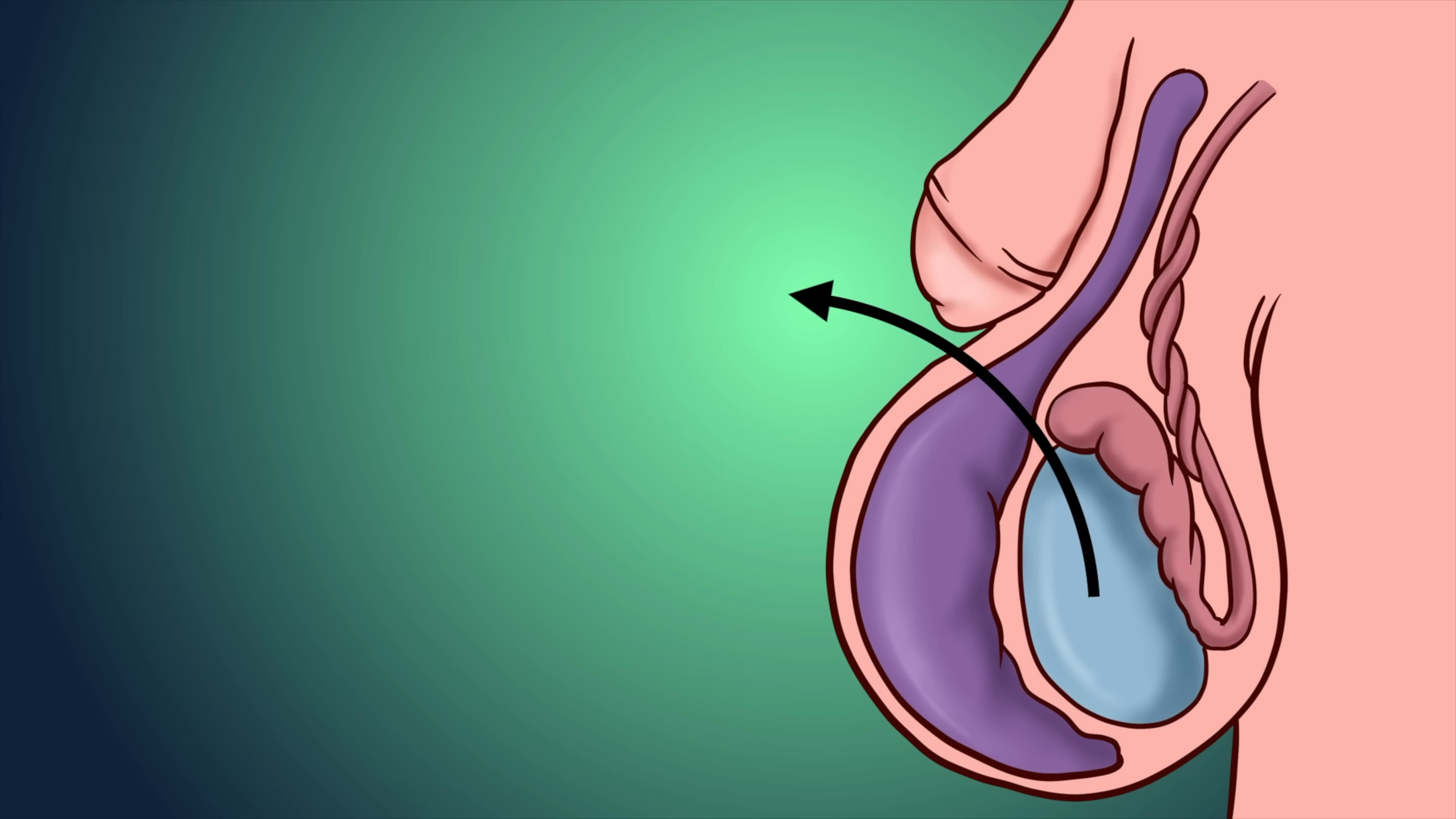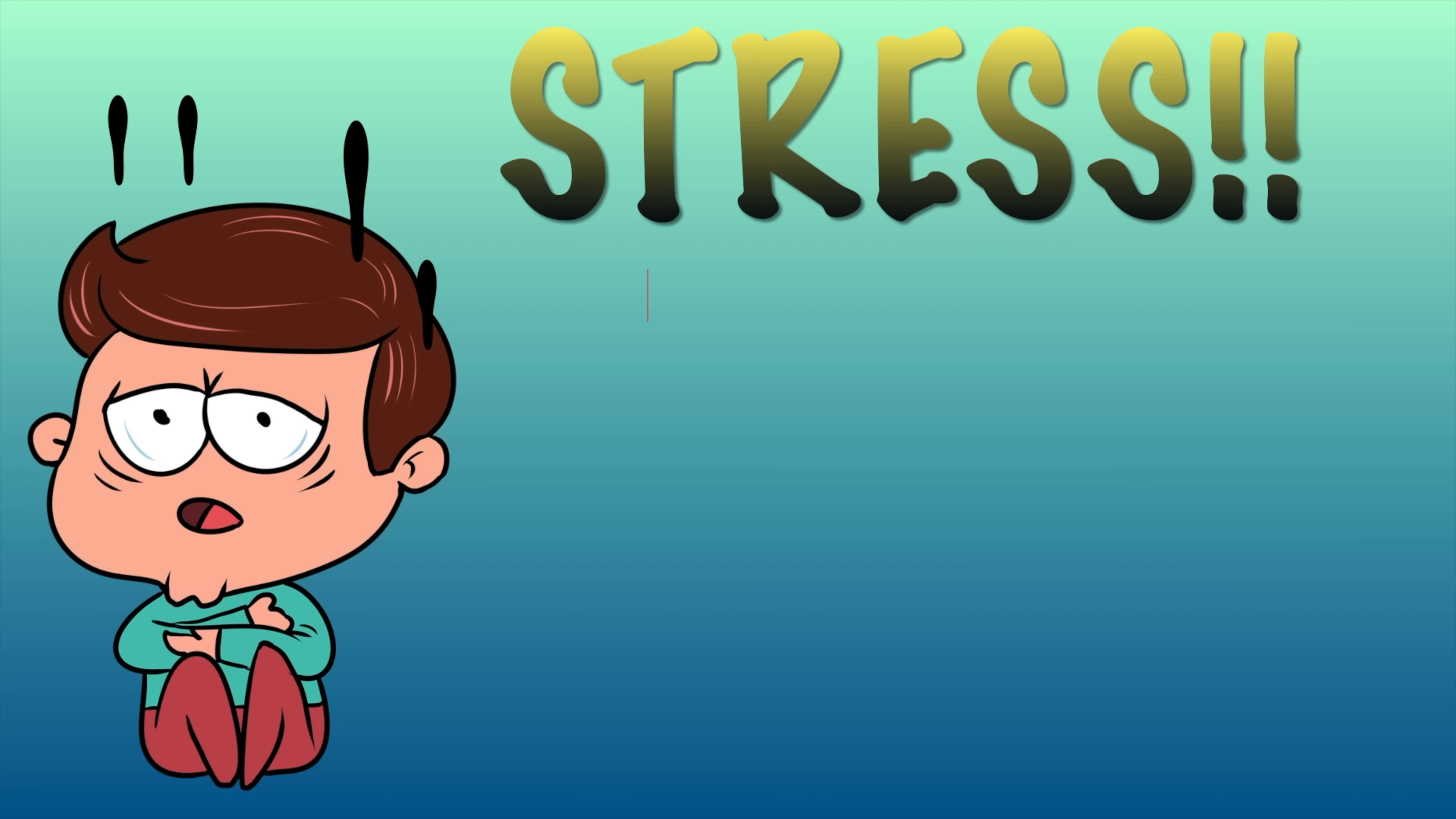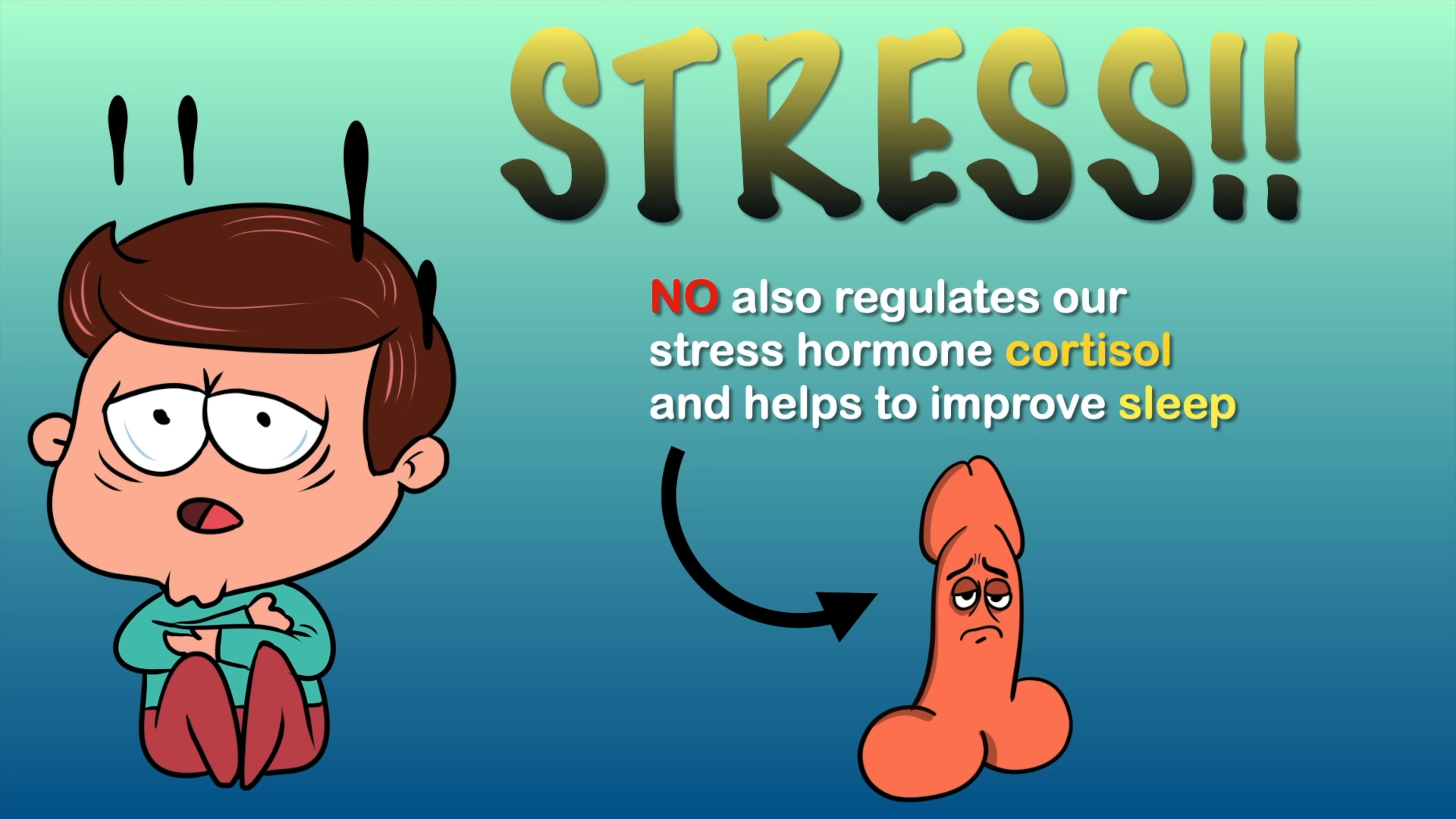Nitric oxide also helps you make testosterone and is also involved in the hormone that controls the amount of testosterone your body makes. Testosterone is important for healthy erection. Nitric oxide also regulates our stress hormone cortisol and helps to improve sleep. Stress is one of the common underlying causes of erectile dysfunction.